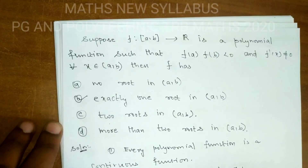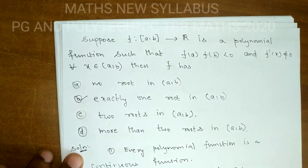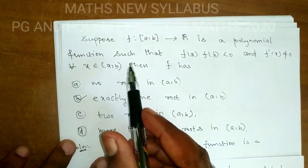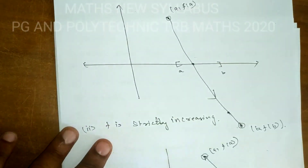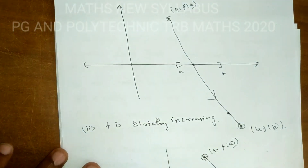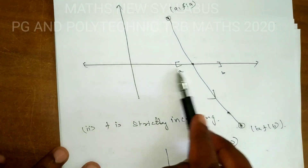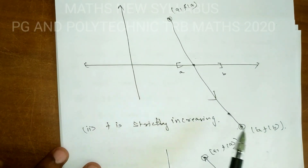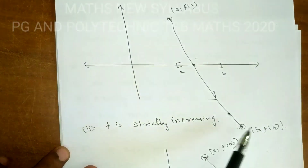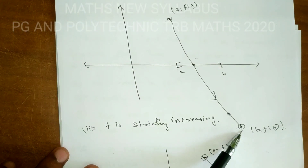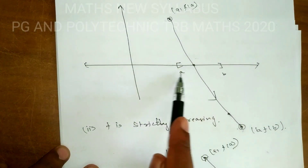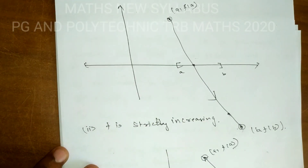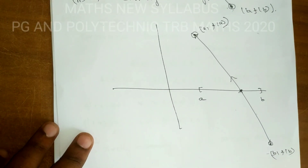Simple approach: the graph of this polynomial function is continuous. Since f is strictly decreasing or strictly increasing, it is not a broken graph. It crosses the x-axis at exactly one point, because a strictly monotone continuous function can cross the x-axis only once.